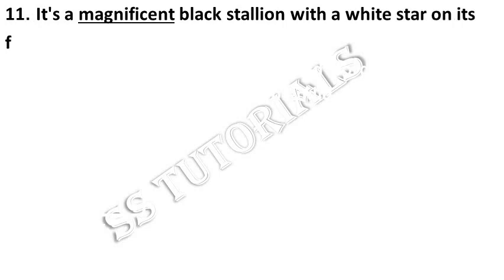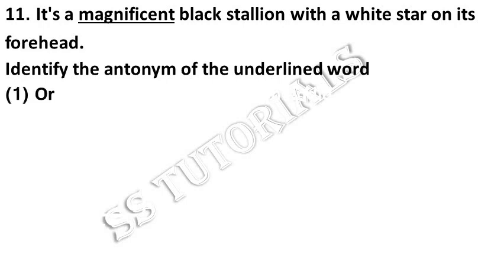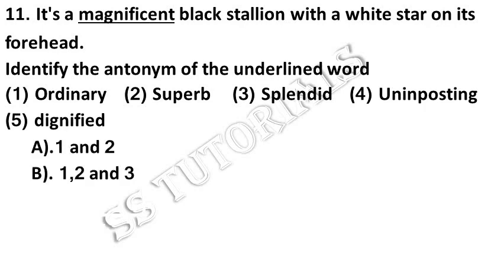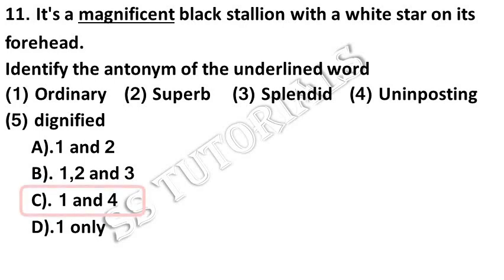It's a magnificent black stallion with a white star on its forehead. Identify the antonym of the underlined word 'magnificent'. Answer: Ordinary and Unimposing.